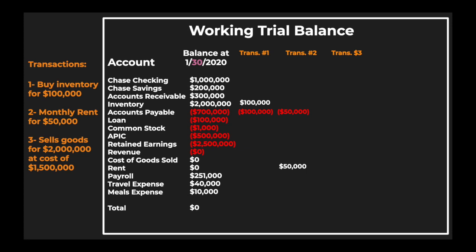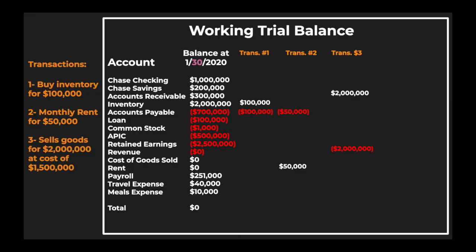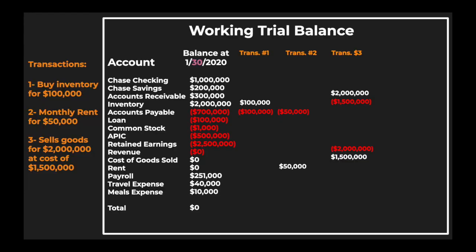Transaction number three is selling goods for $2 million. The first entry is a debit to accounts receivable for $2 million and a credit to revenue for $2 million. Don't forget the cost: we said the cost is $1.5 million, so you also record a debit to cost of goods sold and a credit to inventory for $1.5 million. You are recording the cost — which has a debit nature — and reducing inventory, which is why you credit inventory.